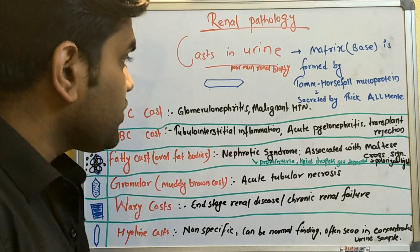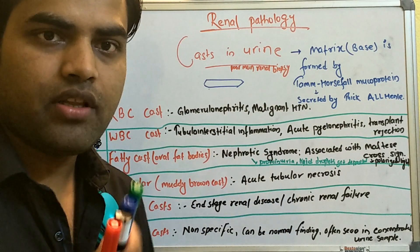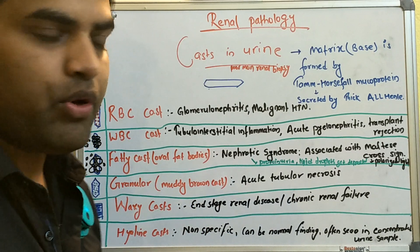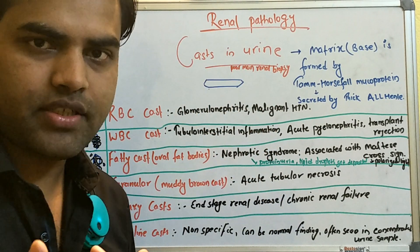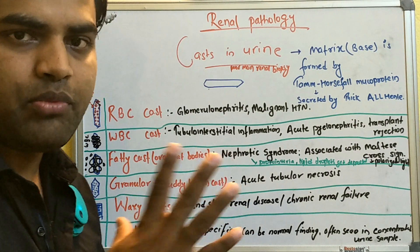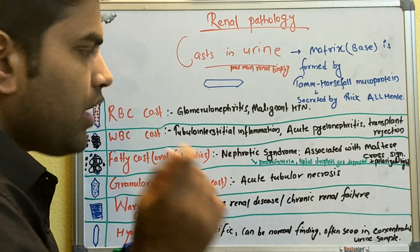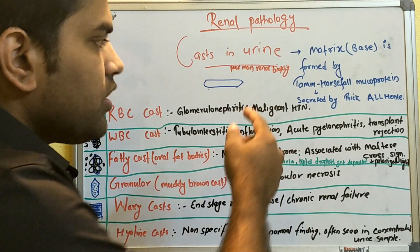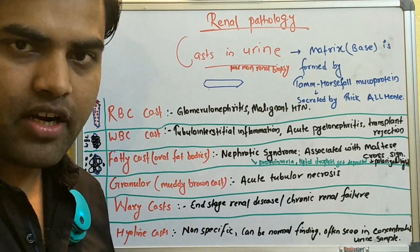Today we'll be discussing renal pathology, continuing our revision of the First Aid renal section. We're going to talk about casts in urine. Casts are formed because, while there is normally no protein loss from the glomerular filtration barrier due to its charge, a certain amount of protein is secreted through the thick ascending limb of the loop of Henle.